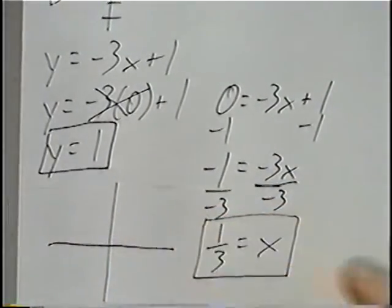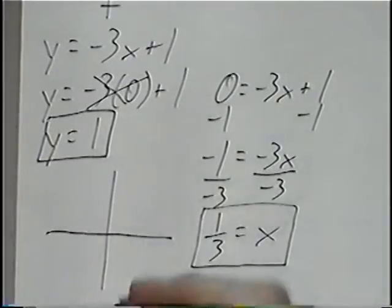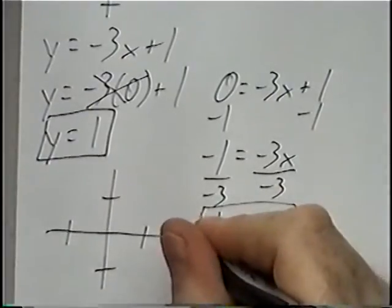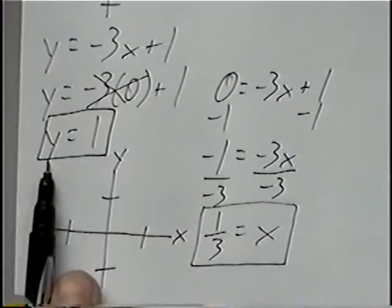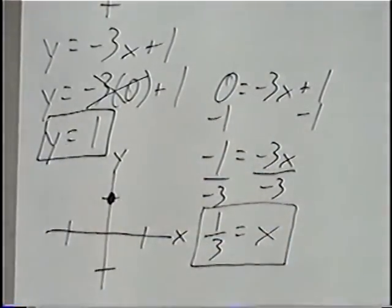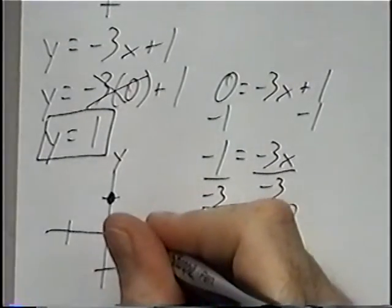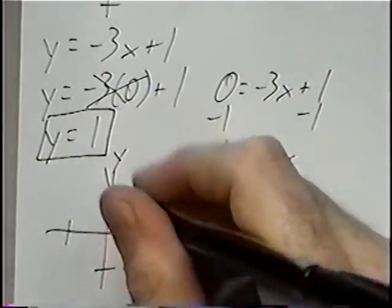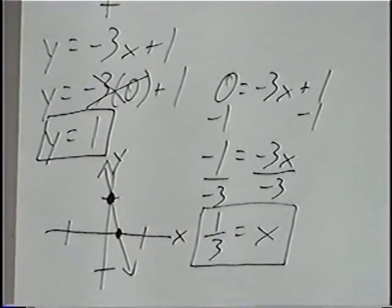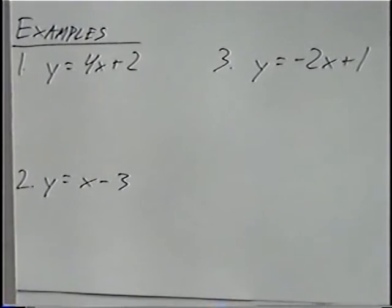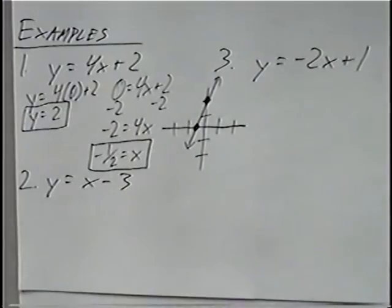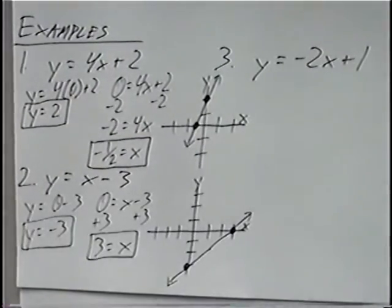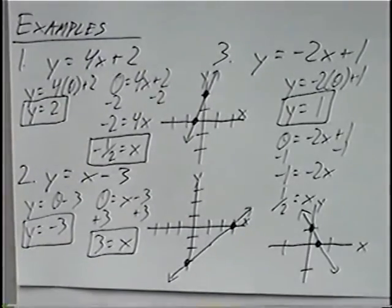Once you have the two intercepts, draw the x-y axis graph. Our biggest number is one, so go one spot in each direction. Label the axes. Y equals one means the graph crosses at y equals one, and x equals one-third means the graph crosses between zero and one. Draw a line through both intercepts, and that is the graph for the equation.